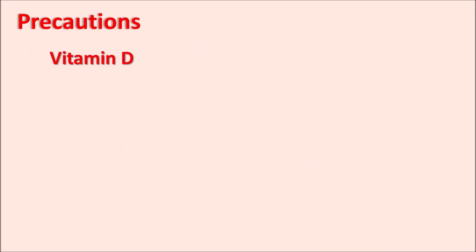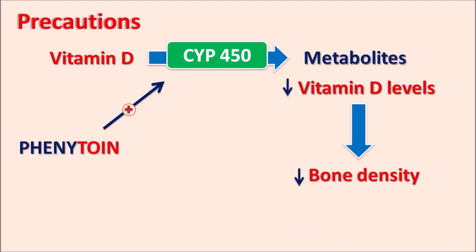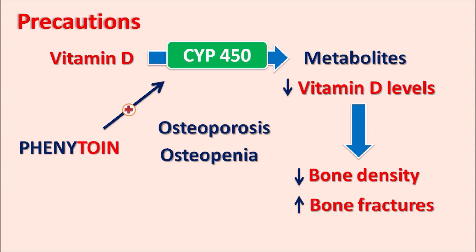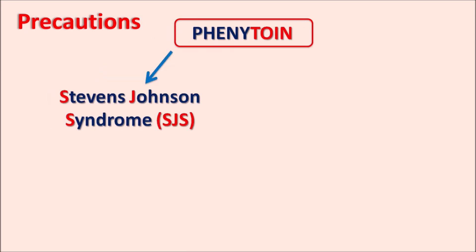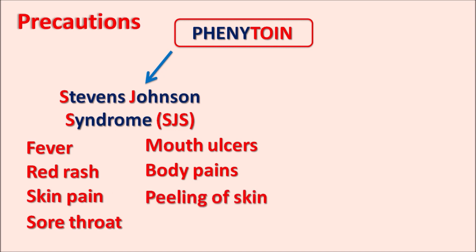Phenytoin acts as an enzyme inducer of the cytochrome P450 system, inducing the metabolism of vitamin D. This results in decreased vitamin D levels, reduced bone density, and increased bone fractures — leading to osteoporosis and osteopenia. Additionally, phenytoin can produce Stevens-Johnson syndrome (SJS), a fatal hypersensitive reaction with fever, red rash, skin pain, sore throat, mouth ulcers, body pains, peeling of the skin, and cough — resembling a flu-like hypersensitive reaction.